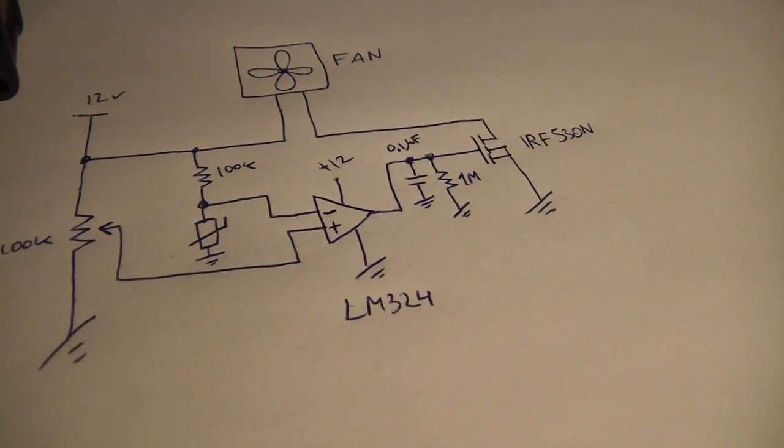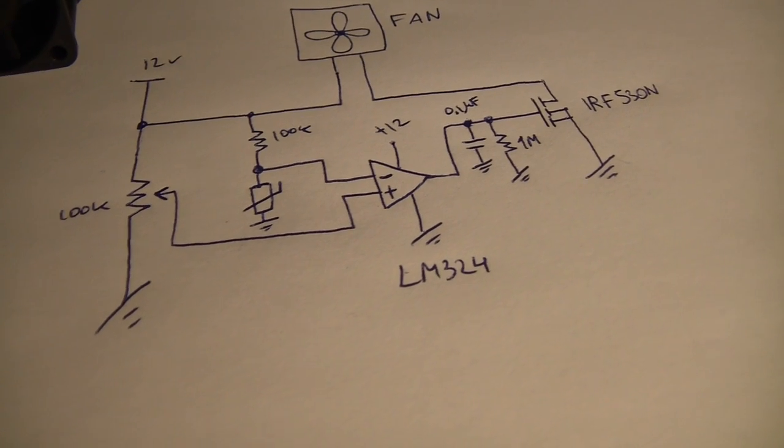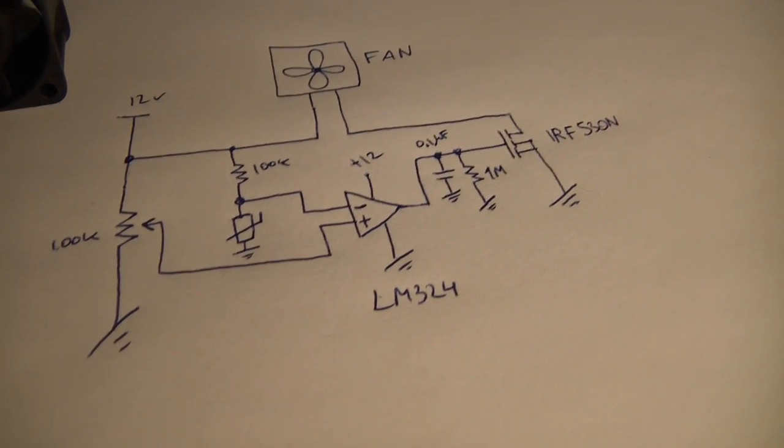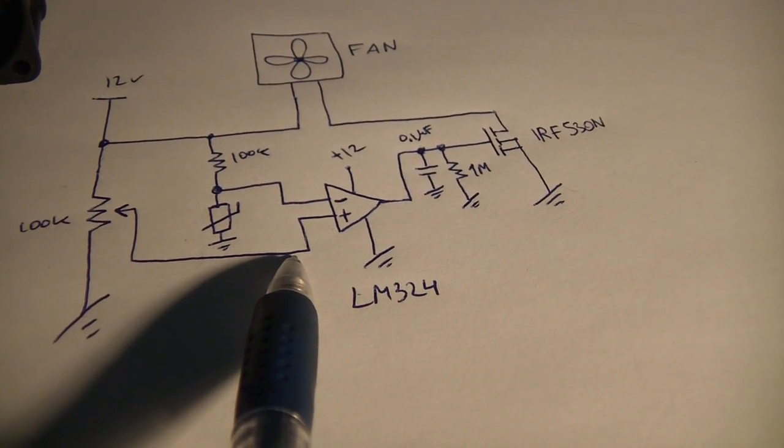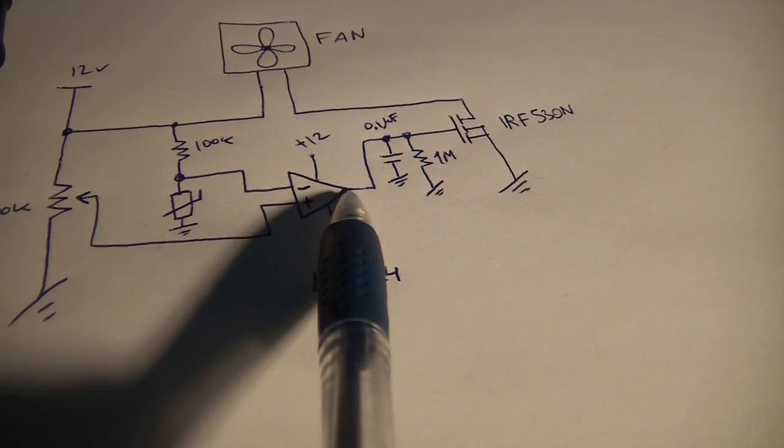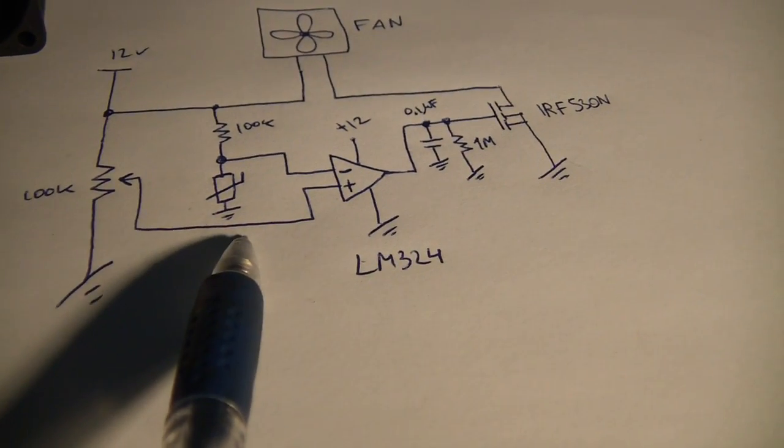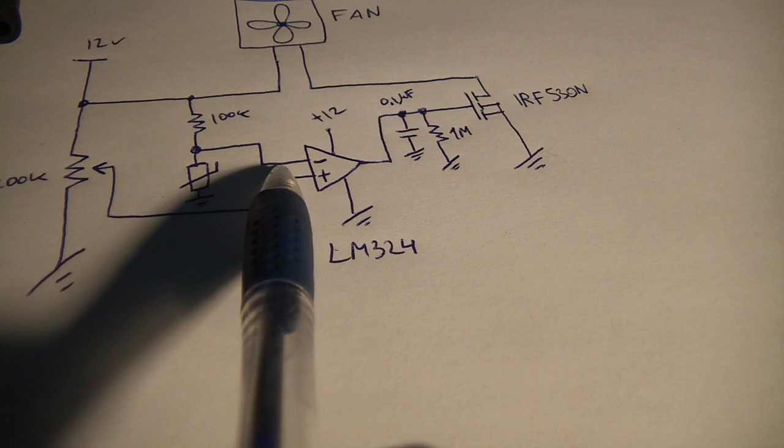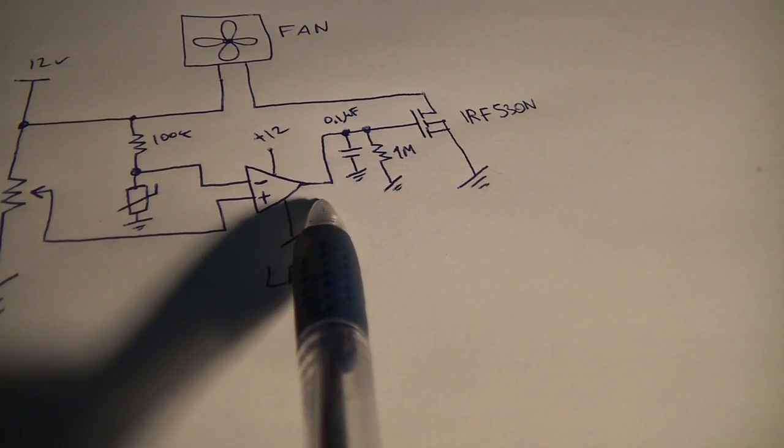The comparator will eventually output a 12-volt signal to the MOSFET and will turn on the fan. At normal operating conditions, for example in room temperature or when the amplifier is not hot enough to turn on the fan, this voltage is lower than this one. That means the comparator is outputting a zero signal to the MOSFET.